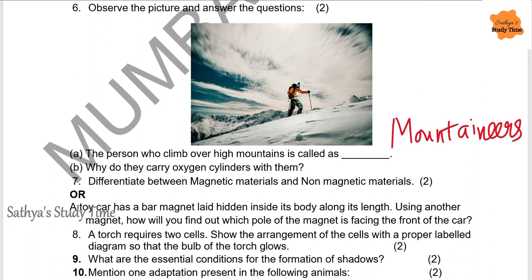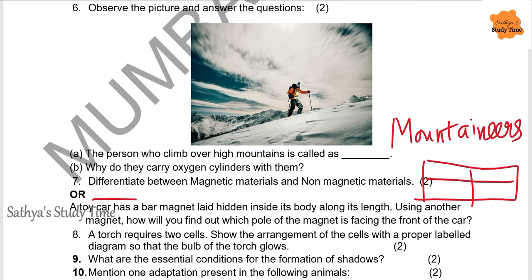Next: Differentiate between magnetic materials and non-magnetic materials. Whenever you come across this type of question — distinguish or differentiate — make sure you draw a tabular column and write magnetic materials and non-magnetic materials as topics with definitions and examples. Materials which attract a magnet are called magnetic materials; materials which do not attract a magnet are called non-magnetic materials.